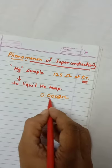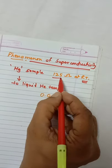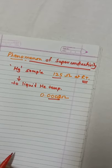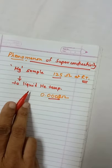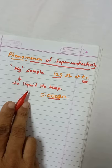So, there was considerable decrease in the resistance of the mercury sample at liquid helium temperature.